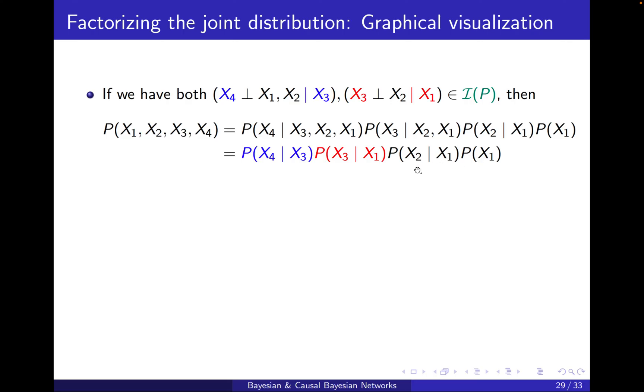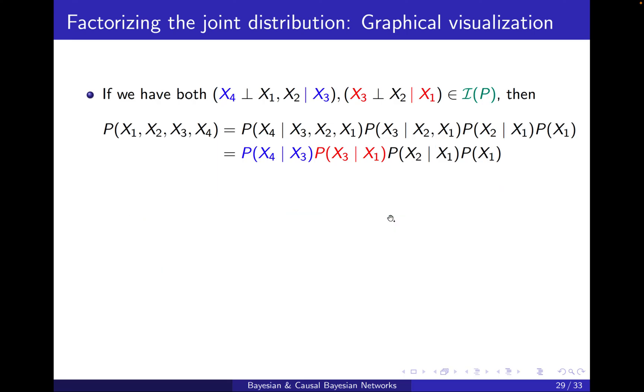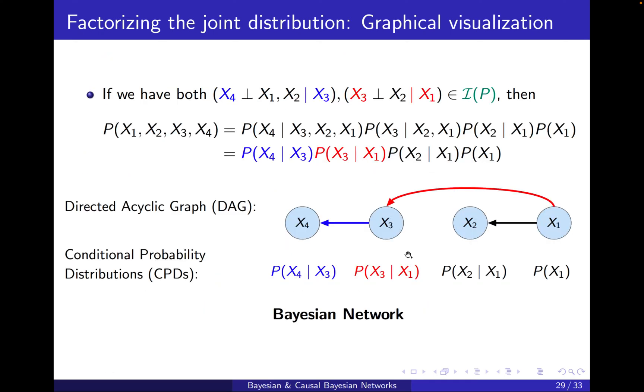How to visualize it? We will basically have the previous graph. It's just that now this term is no longer x3 conditioned on both x2 and x1. It's only conditioned on x1. So I expect this link to be deleted. And this is what will happen.